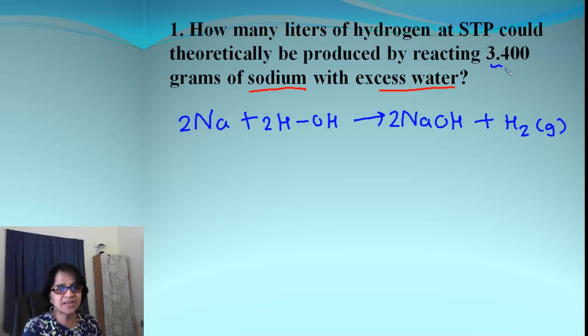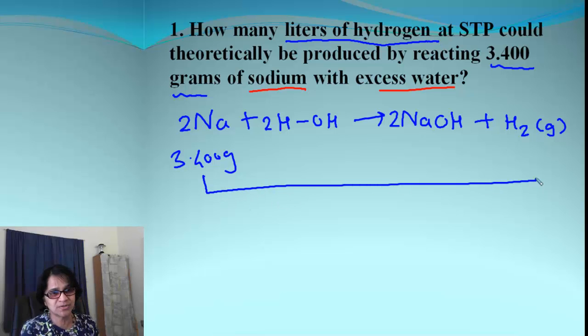The given things are only 3.400 grams of sodium. So that's my beginning point. And then the end point, I have to find out how many liters of hydrogen are there at STP. So that goes from sodium to hydrogen and it's how many liters. Remember again, our bridge is always mole-to-mole ratio. So there we go.